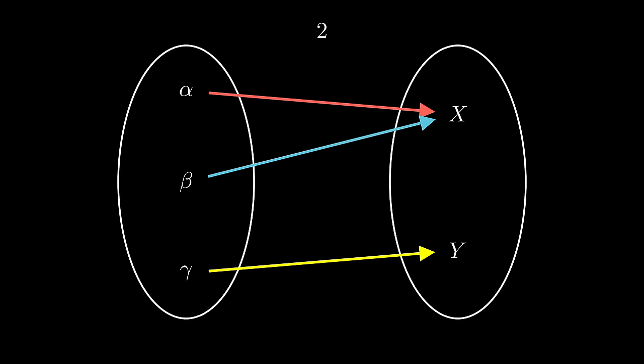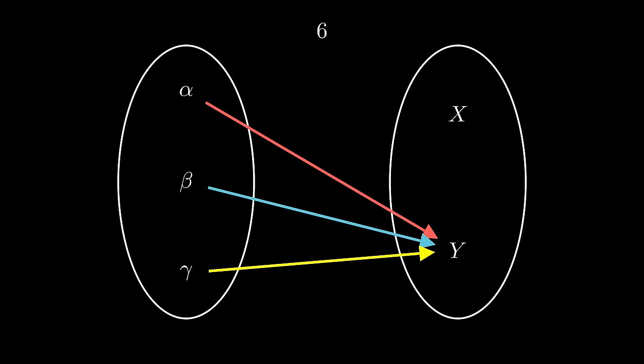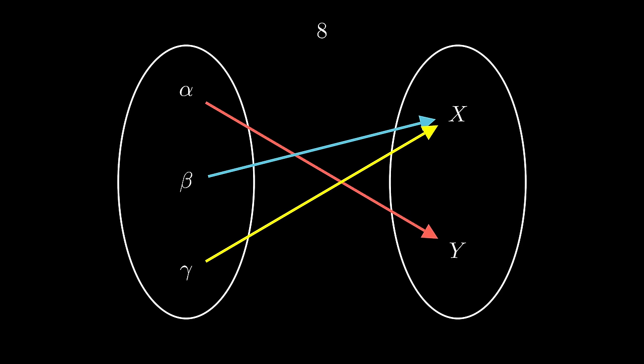1, 2, 3, 4, 5, 6, 7, 8. 8 is 2 to the power of 3, because each of alpha, beta, and gamma can choose their image independently.